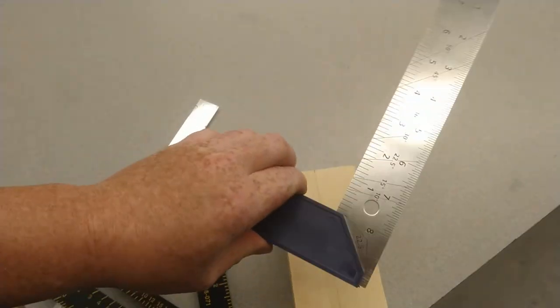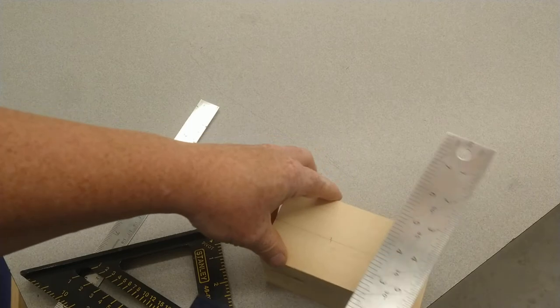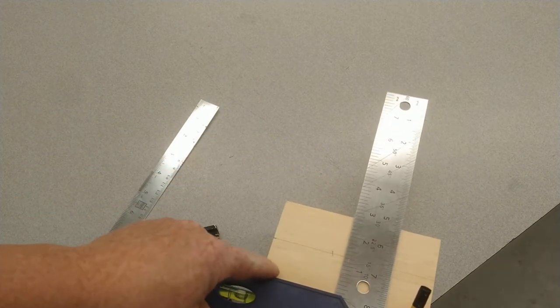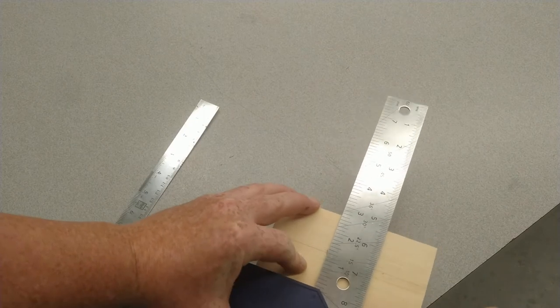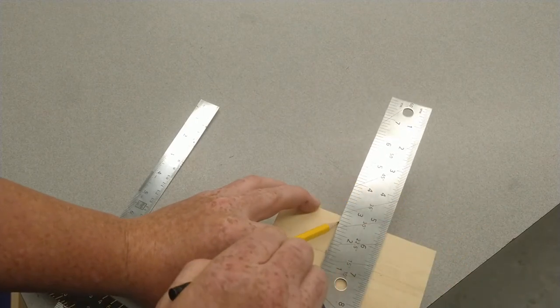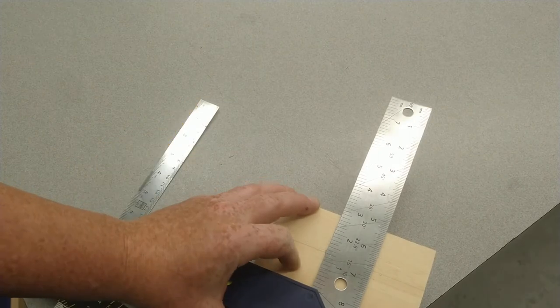Once you have that mark there, you're going to take your square. I'll use the tri-square this time. It's going to go here, referencing edge on the side. Slide it up to the mark, draw a line across, nice and light.